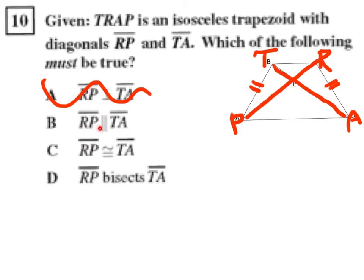B, line segment RP is parallel to line segment TA. So, are the diagonals parallel? Surely, in any proper trapezoid, they'll never be parallel. So, that one, just no hope for that response.